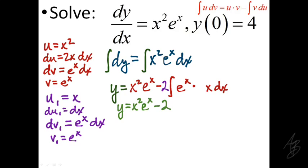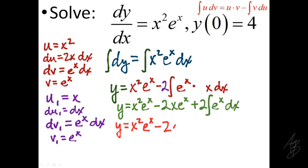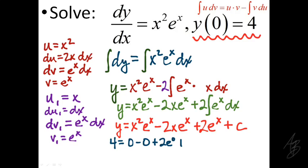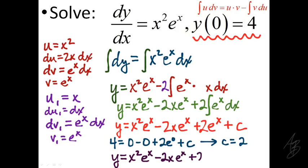Applying the formula again, the remaining integral becomes x times e to the x minus the integral of e to the x dx, and distributing the 2 gives plus 2e to the x. Combining everything: y equals x squared e to the x minus 2x e to the x plus 2e to the x plus C. Using the initial condition y(0) equals 4, we substitute x equals 0 and y equals 4, giving C equals 2.